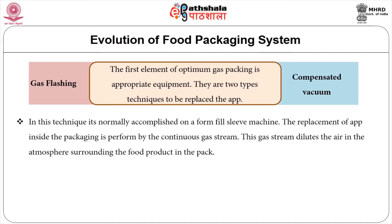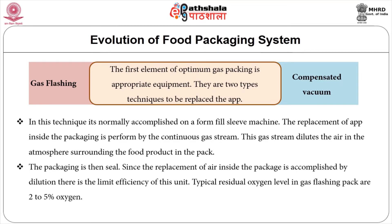Regarding machine systems for MAP, the first element for optimum gas packing is appropriate equipment. There are two types of techniques to replace the air: gas flushing and compensated vacuum. Gas flushing is normally accomplished on a form-fill-seal machine. The replacement of air inside the packaging is performed by a continuous gas stream, which dilutes the air in the atmosphere surrounding the food product in the pack. The packaging is then sealed. Since the replacement of air is accomplished by dilution, there is a limit on the efficiency of this method. Typical residual oxygen levels in gas-flushed packs are 2 to 5 percent oxygen.